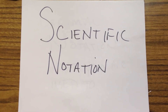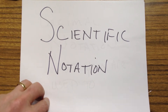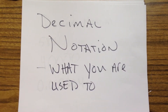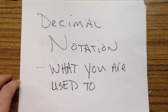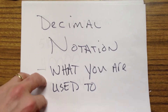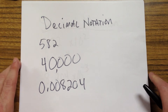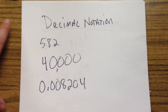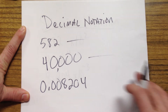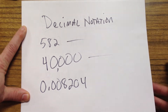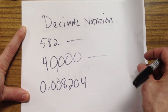This lesson is hopefully a review of scientific notation, something you should have picked up in one of your math classes at some point. First, I want to review what decimal notation is. Decimal notation is what you're used to — whenever you see numbers as you're used to writing them: 582, 40,000, 0.008204. Those are written in what we call decimal notation.